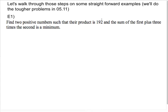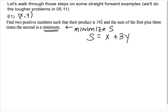Let's walk through some of the basic examples. Find two positive numbers such that their product is 192 and the sum of the first plus three times the second is a minimum. So the thing we're trying to minimize, I'm going to call it S. And S is the sum of the first, so I'm going to say that my numbers are X and Y. So S is the sum of the first plus three times the second.